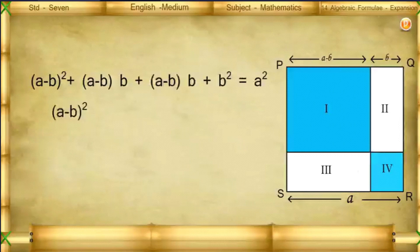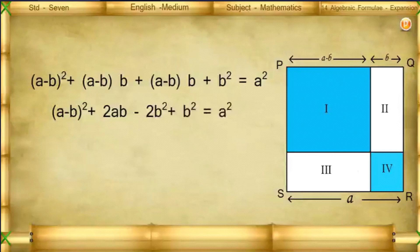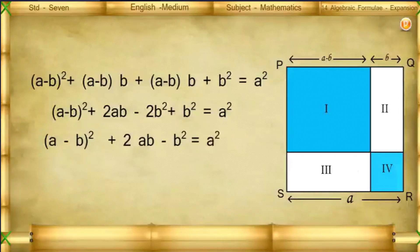(a − b)² + 2ab − 2b² + b² = a². Therefore, (a − b)² + 2ab − b² = a². Rearranging, (a − b)² = a² − 2ab + b².